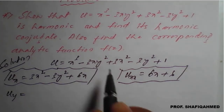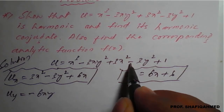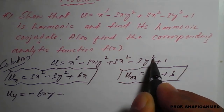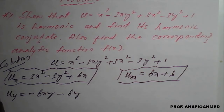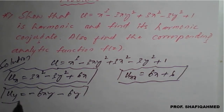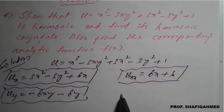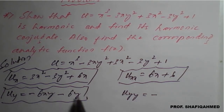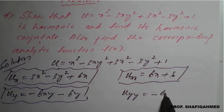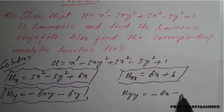Differentiating uy again with respect to y to get uyy: differentiation of -6xy with respect to y gives -6x (since 6x is constant), and differentiation of -6y with respect to y gives -6. So uyy = -6x - 6.